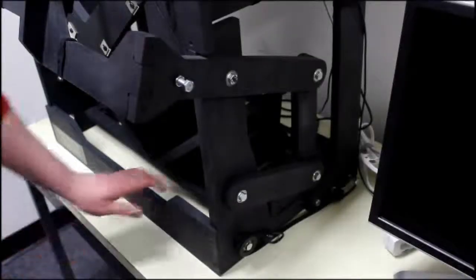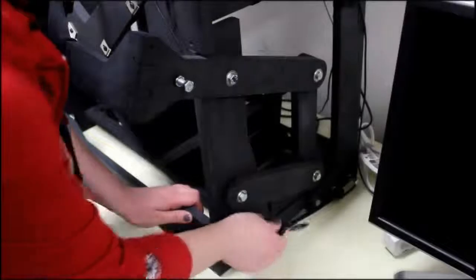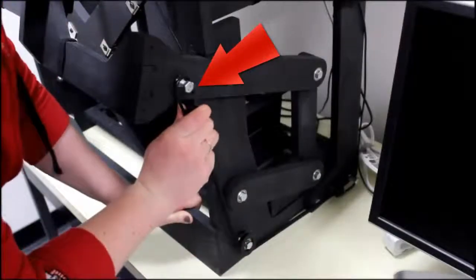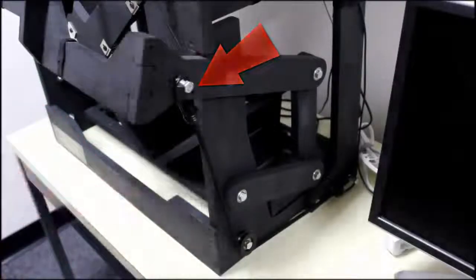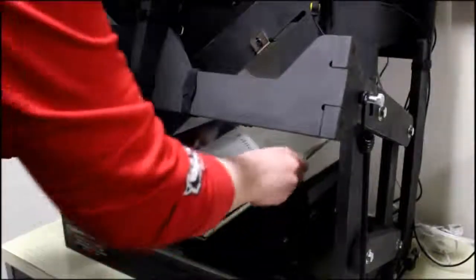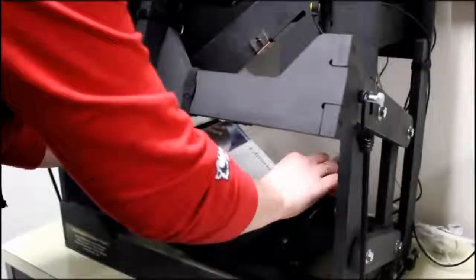Attach the bungee cord to the bottom bolt, pull it around the pulley, and attach to the top bolt on the handle arm. Repeat this action for the other side. Set the book on the cradle, open to the first page or cover that you would like to scan.